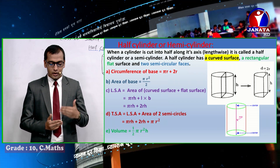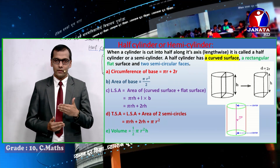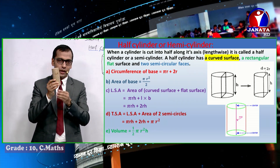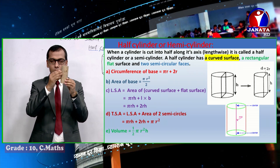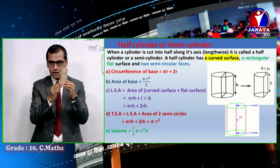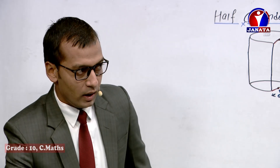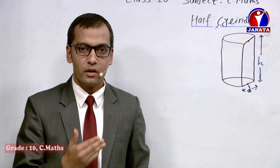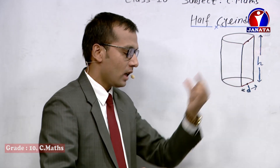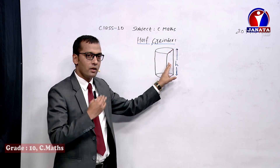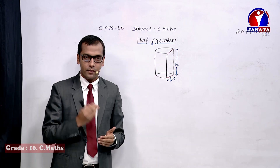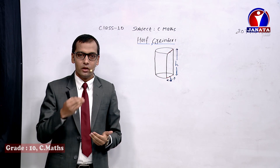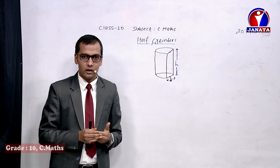On the slide we can see the title 'half cylinder,' also called semi-cylinder or hemi-cylinder. When we cut a solid cylinder vertically along its axis — along its length — we obtain a half cylinder. This half cylinder has different surfaces. The front part is a flat rectangular surface, the back part is a curved surface, and at the base and top there are semi-circular faces.